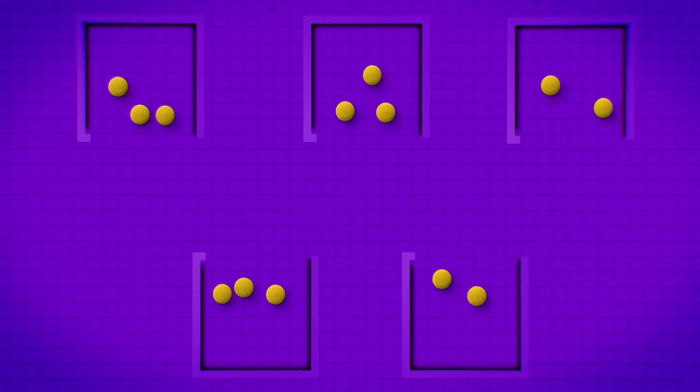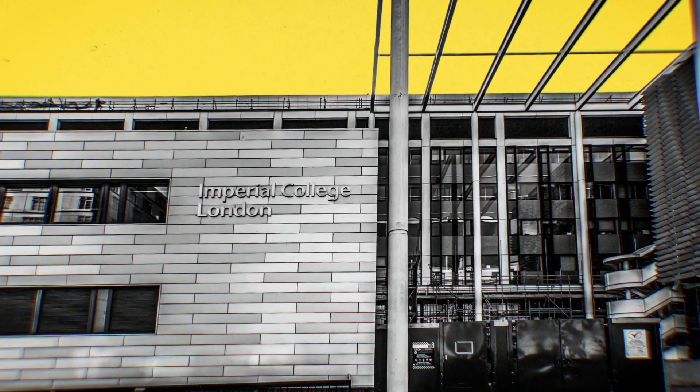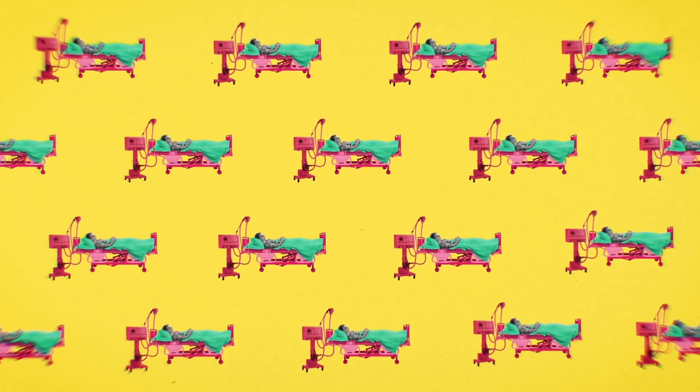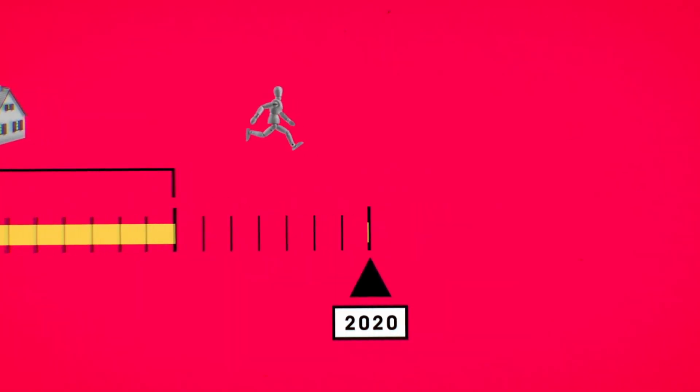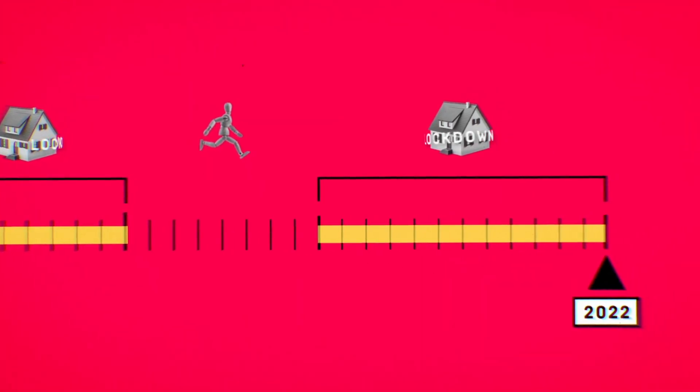But there's one more thing that we might need to do. In order to stop a second wave, it's possible we'll have to return to lockdown multiple times. One study by Imperial College London said that we might need to keep re-entering lockdown if the number of intensive care admissions gets too high. And in mid-April, a team of Harvard researchers said that prolonged or intermittent social distancing might even be necessary until 2022.